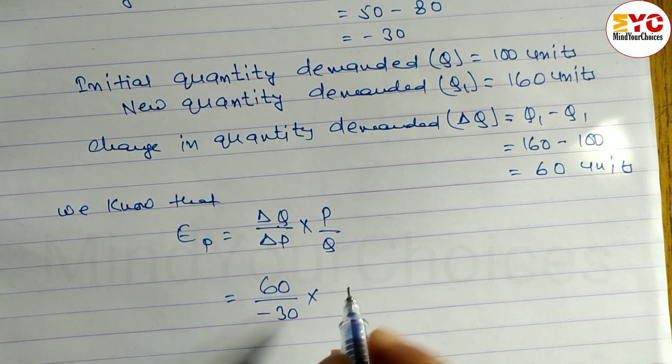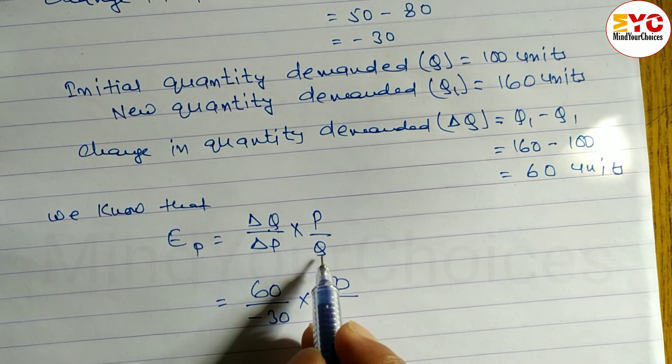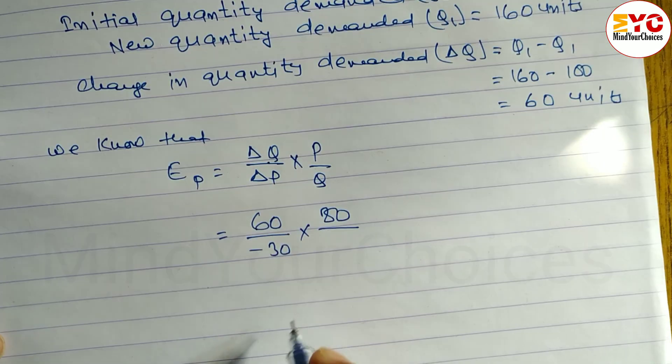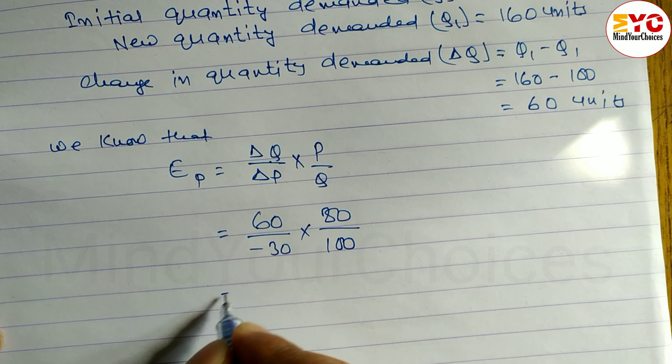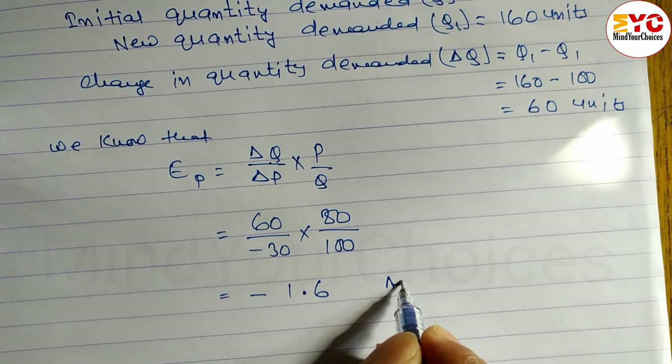Into P, the initial price, divided by Q, initial quantity, so 80 divided by 100. Now calculate this and you will get minus 1.6 as your answer.